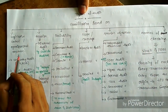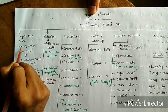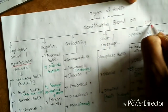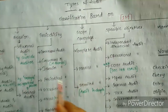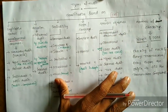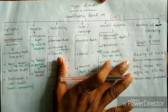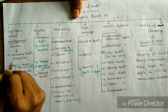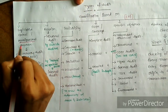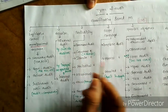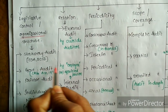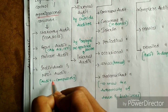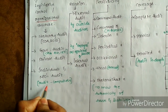Types of audit: first, based on legislative control and organizational structure. Please go through this carefully — we can get one mark from this. Based on organizational structure, audit is divided into statutory audit, government audit, private audit, and individuals and NPOs (nonprofit organizations) audit.